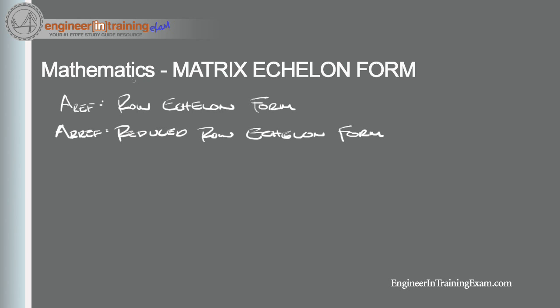Any matrix can be transformed into its echelon forms using a series of elementary row operations. If you recall from a previous video, we went over elementary row operations, so we will definitely be putting them to use in this tutorial. When given some matrix, we need to first determine the first pivot — that is, the first non-zero entry in the first column — and then interchange rows so the pivot row is at the top of the matrix.